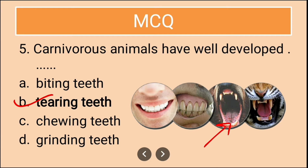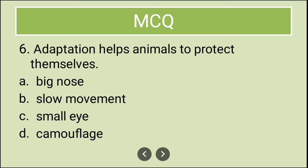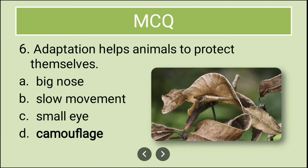The next question is: adaptation helps animals to protect themselves — is it big nose, slow movement, small eye, or camouflage? The most appropriate answer is camouflage. There are many animals, for example a chameleon, whose color blends so nicely with the surrounding that it is very difficult to identify them. That is what we call camouflage.